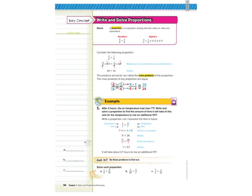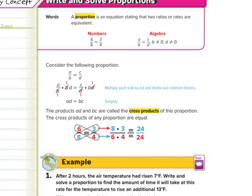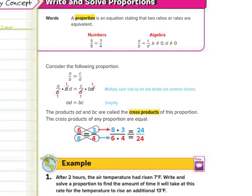Our key concept today is to write and solve proportions. A proportion is an equation stating that two ratios or rates are equivalent, such as six-eighths equals three-fourths. If you were to use what's called the cross products, six times four is twenty-four, and three times eight is also twenty-four. So the cross products of any proportion are equal.